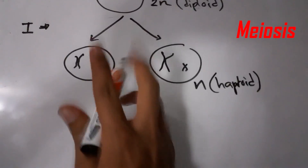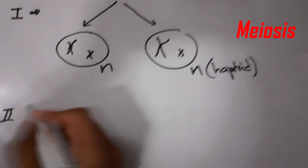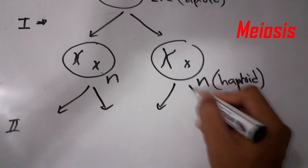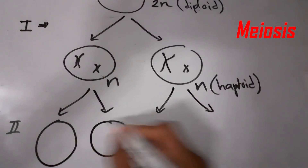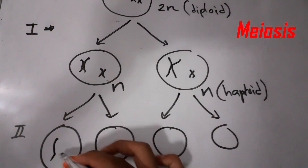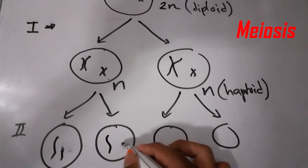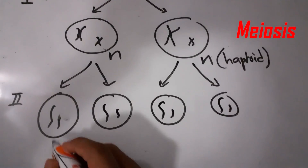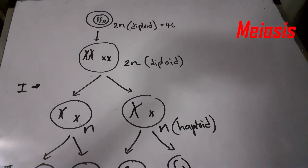In meiosis there are two divisions. The first is the meiotic division, and the second is a mitotic division. After the second division, the cells are separated into four cells, each having one long chromosome and one short chromosome. At the end you will have four haploid daughter cells from the original diploid cell.